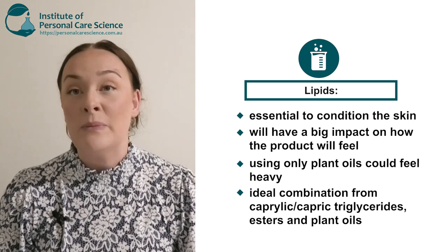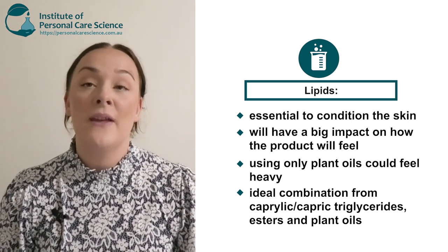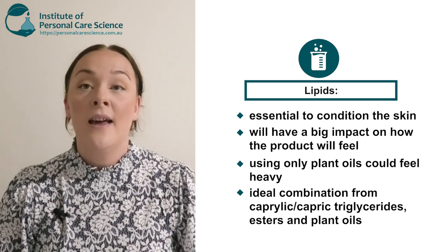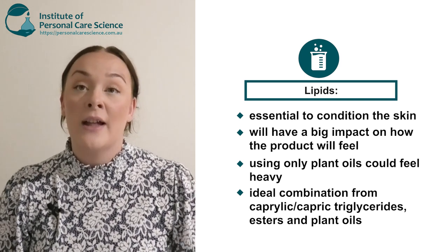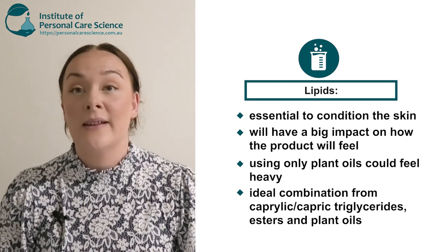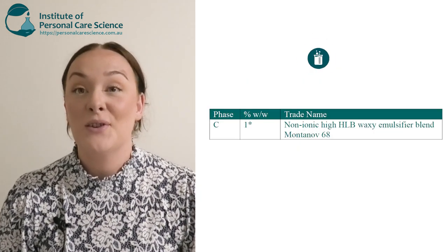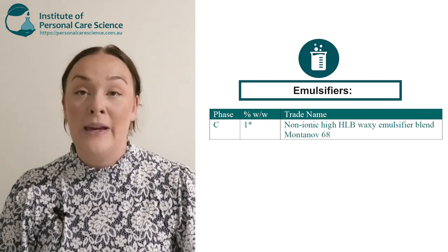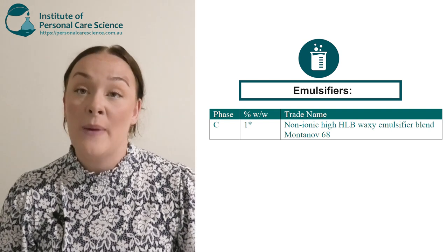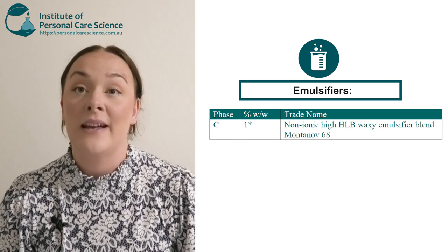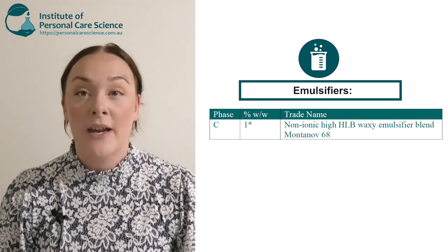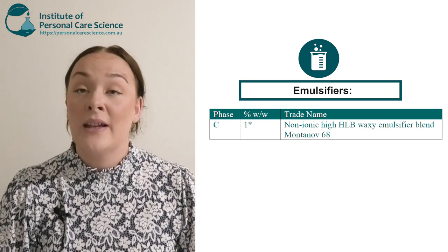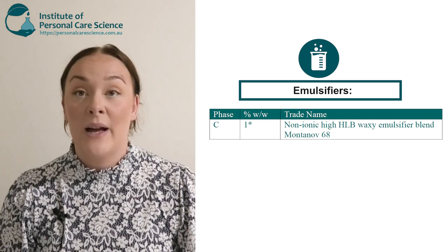Please don't use all natural plant oils because this is going to make it heavy and greasy. You can use a small amount of a plant oil and then get your other benefits from a triglyceride, which has a medium skin feel, or a light skin feel from an ester or some silicones. Next is your emulsifier — we recommend using a non-ionic high HLB waxy emulsifier blend for best results and stability. Make sure you check supplier brochures for recommended inputs and use the lower end of the input range.